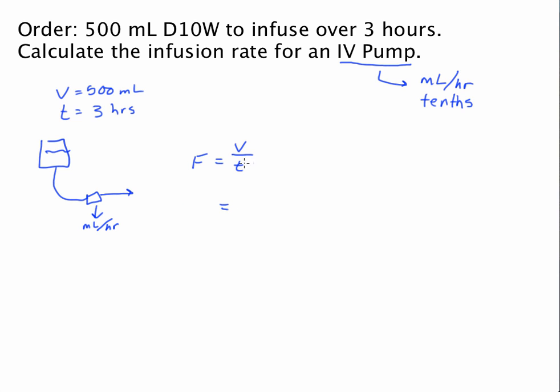So, in this problem, if I start with the volume to infuse, which is 500 milliliters, and I divide that by the time, 3 hours, notice if you just do this division problem, you're going to get milliliters per hour. That's exactly what we want.